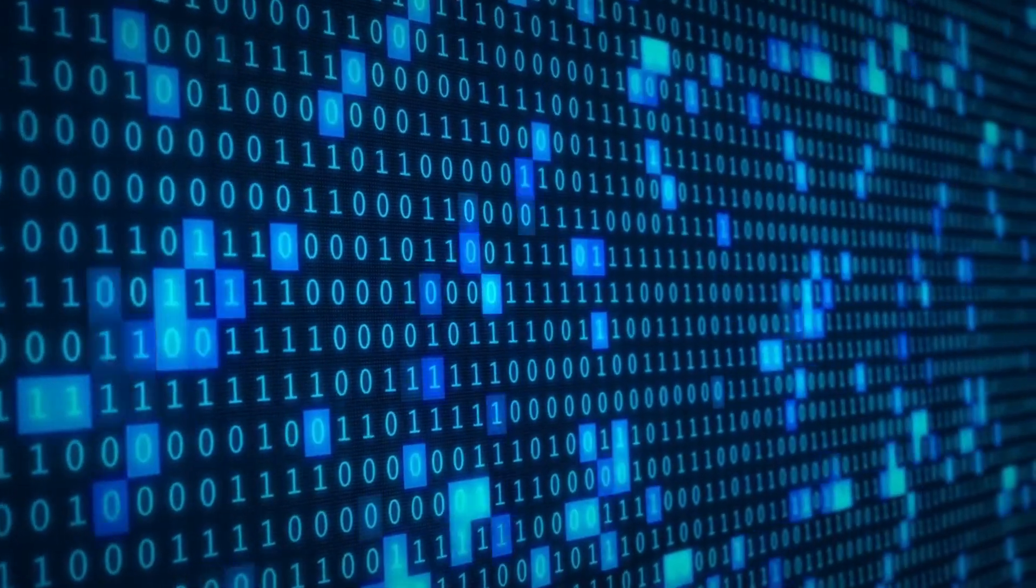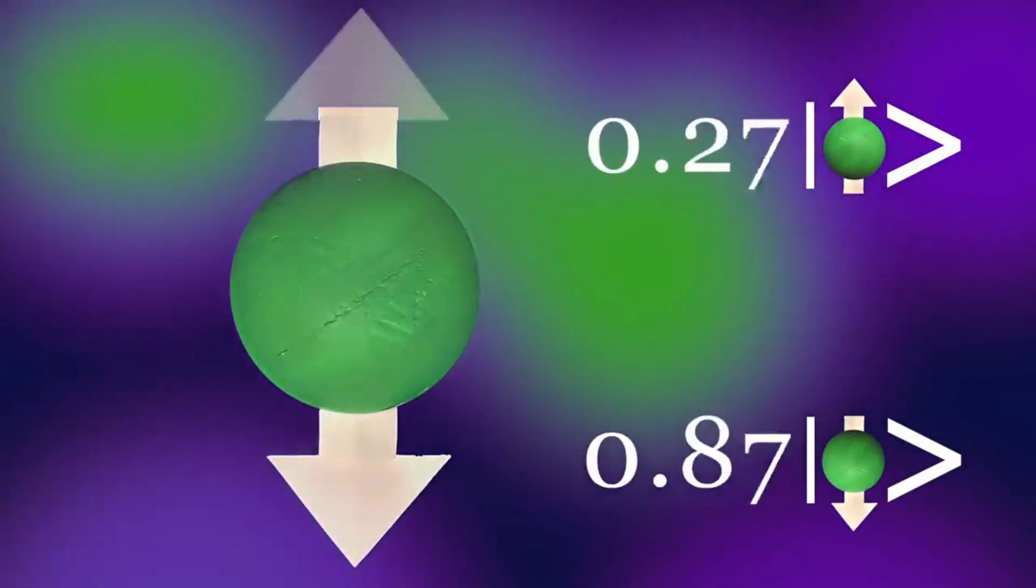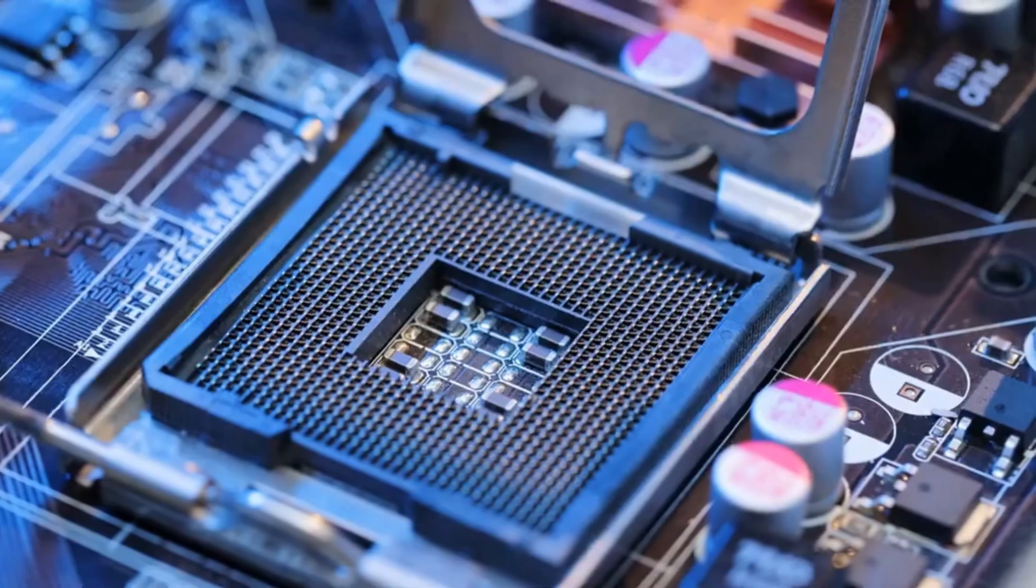Essentially, while a bit can be a 0 or a 1, a qubit can be a 0, a 1, or both at the same time. To illustrate this concept, imagine juggling. With classical computing, it's like juggling two balls, one in each hand. With quantum computing, it's like juggling countless balls simultaneously with just two hands.